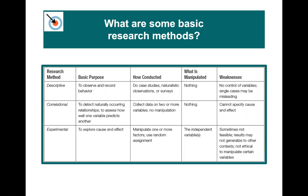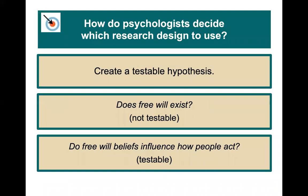Descriptive methods observe and record behavior — think Jane Goodall — including case studies, naturalistic observations, and surveys. Nothing is manipulated; you're basically an observer, but there's no control of variables, and single cases can be misleading. An outlier case can lead to erroneous conclusions about a population. Correlational studies detect naturally occurring relationships and assess how well one variable predicts another, using correlation coefficients we discussed previously.